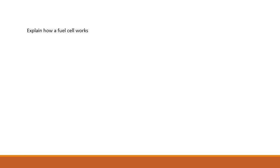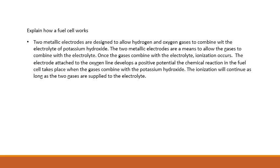Explain how a fuel cell works. Two metallic electrodes are designed to allow hydrogen and oxygen gases to combine with electrolytes of potassium hydroxide. The two metallic electrodes are aimed to allow the gases to combine with the electrolyte. Once the gases combine with the electrolyte, ionization occurs. The electrode attached to the oxygen line develops a positive potential. The chemical reaction takes place when the gas is combined with the potassium hydroxide, and ionization will continue as long as the two gases are supplied to the electrolyte.